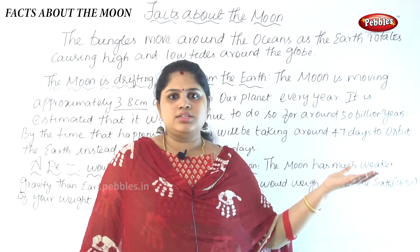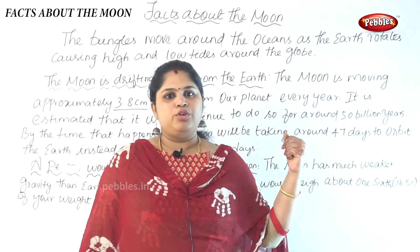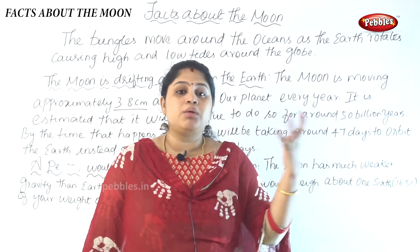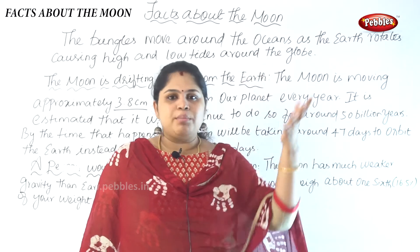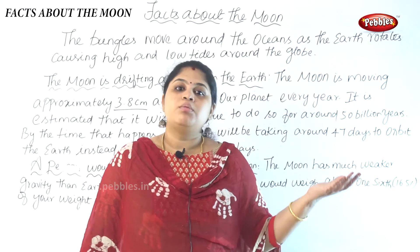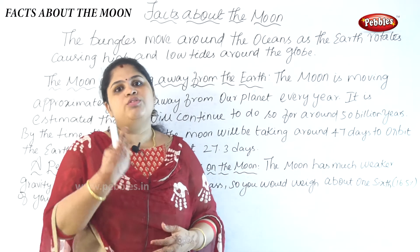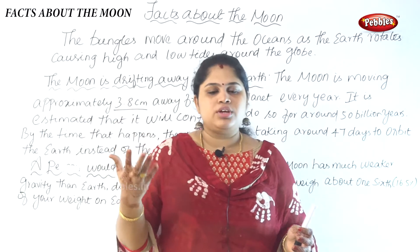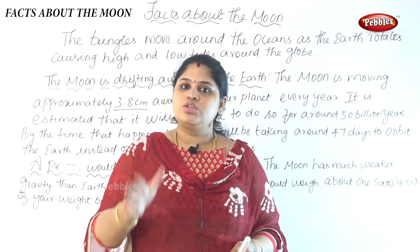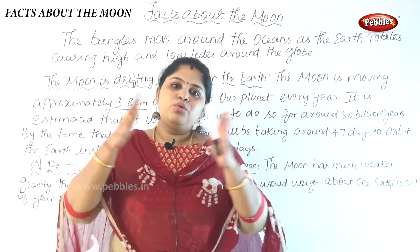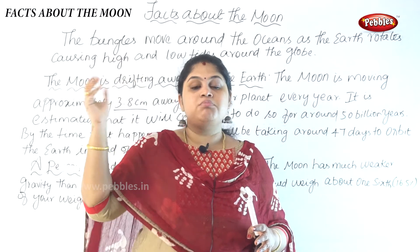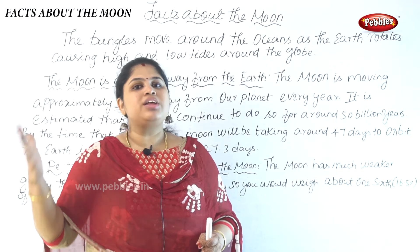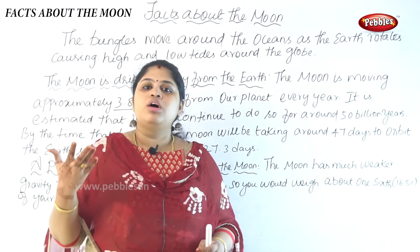If you go to a science or space museum, there will be different weight machines that show your weight according to each planet. For example, if you stand on the earth-planet weight machine it will show your weight on earth, and if you move to another weight machine labeled Mars, it will show your weight on Mars.